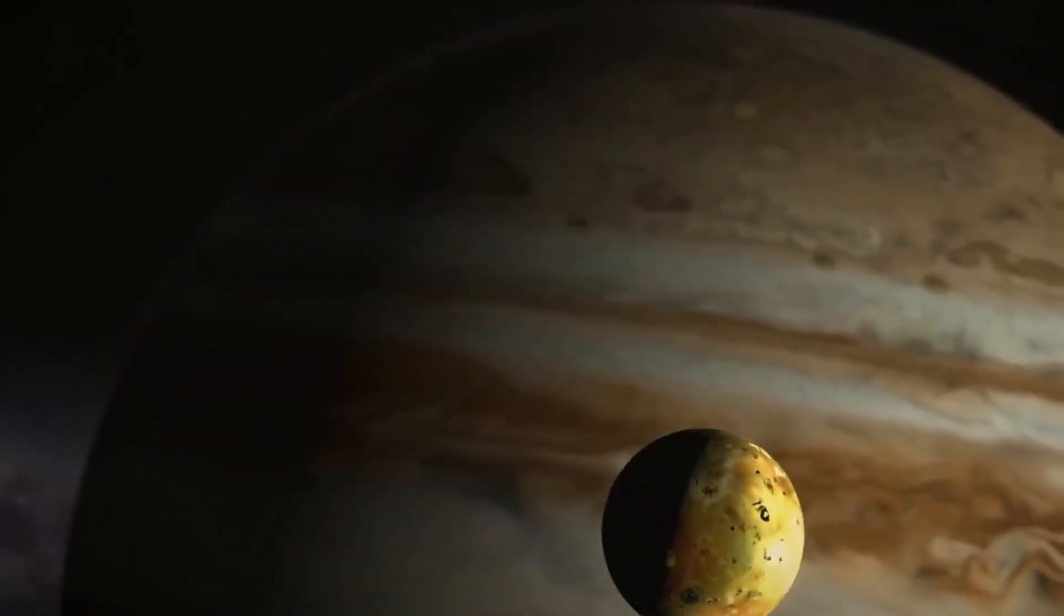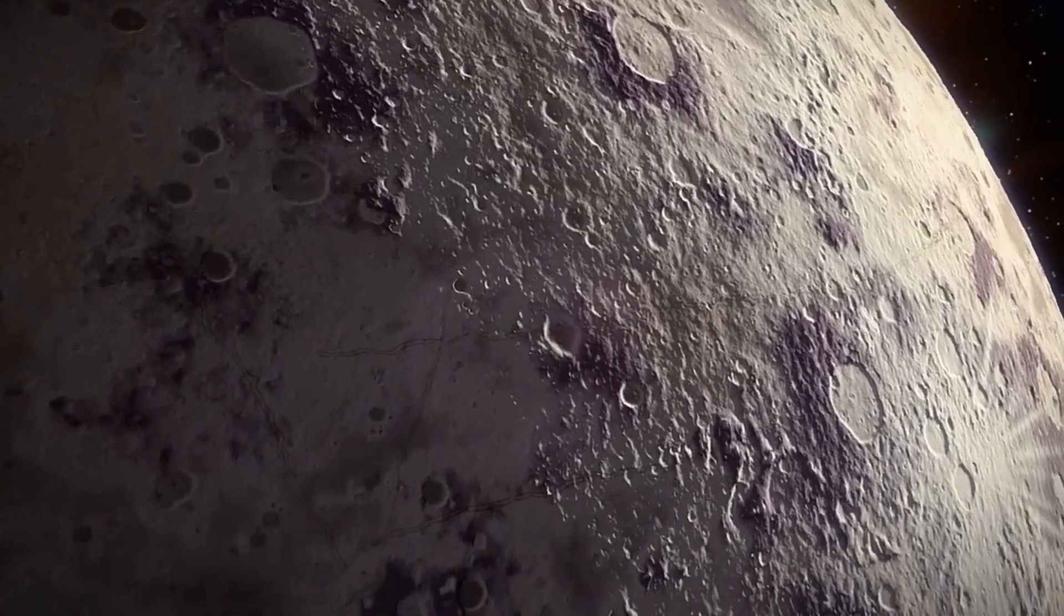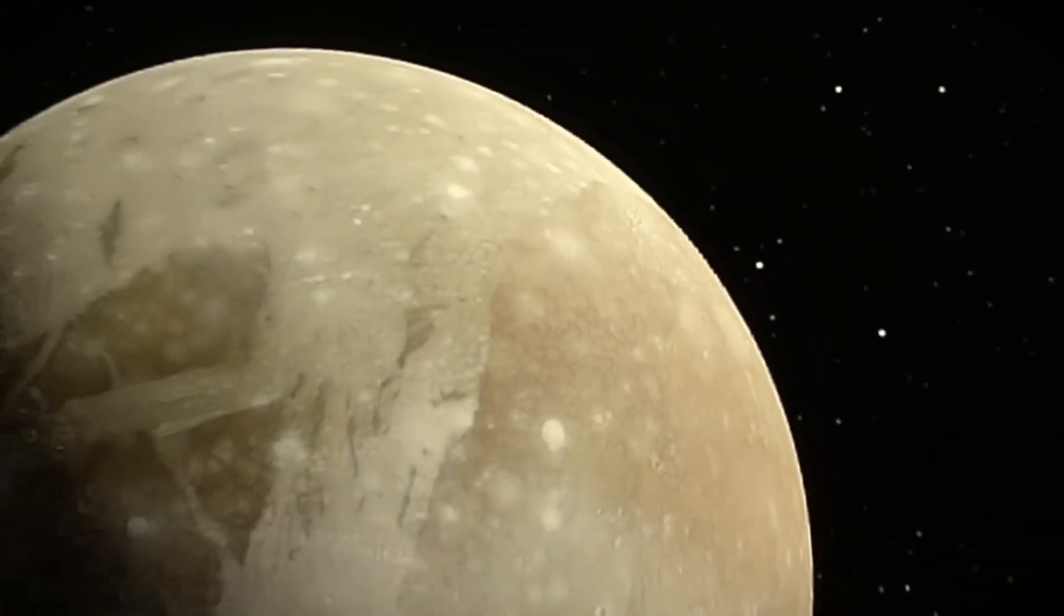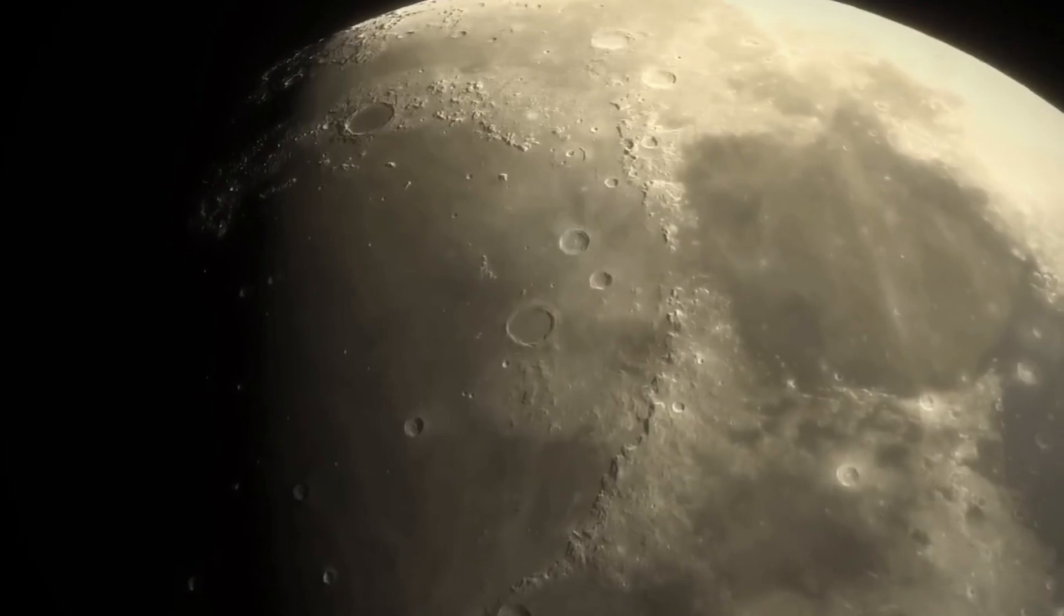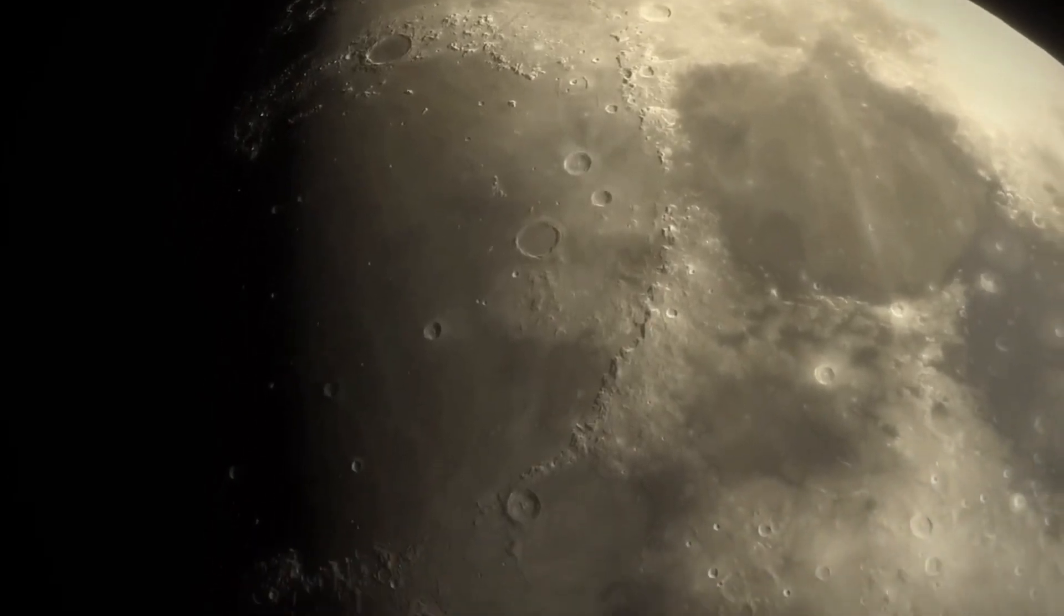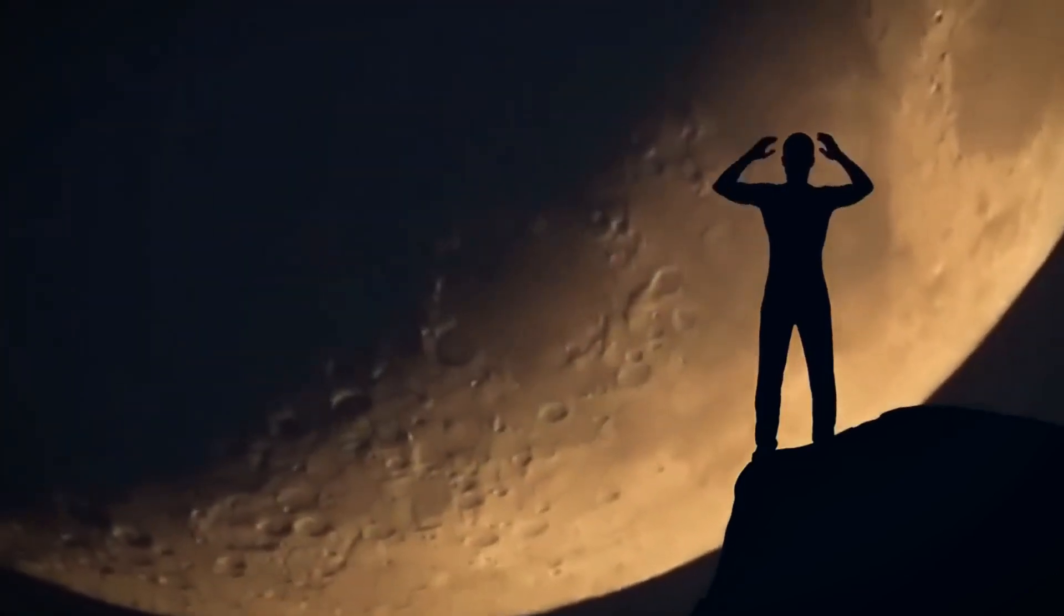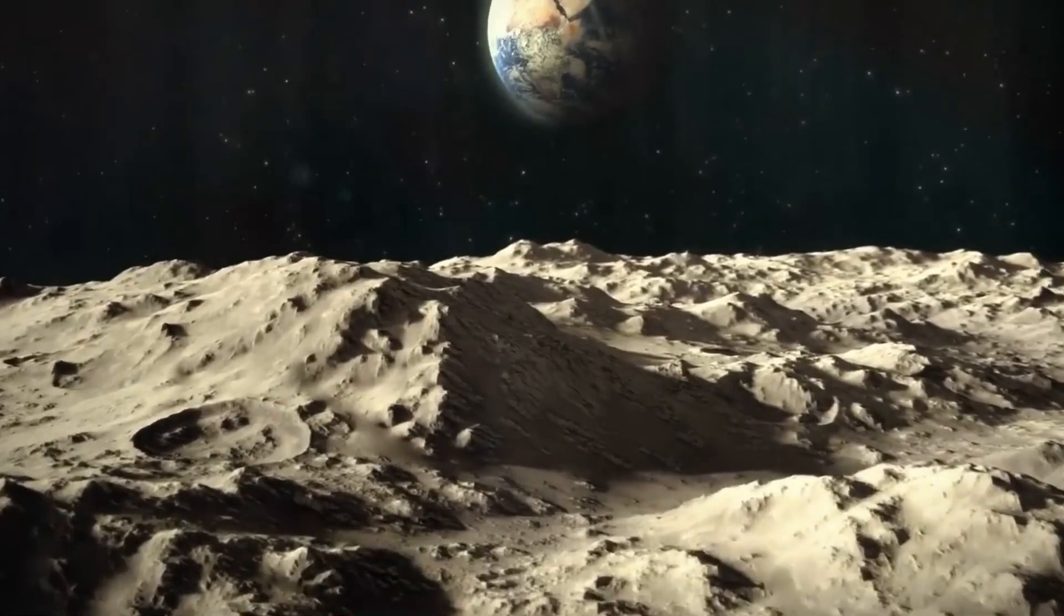Yet nestled within the shadow of this lunar luminary lies a tantalizing enigma, an elusive companion that may have once danced in tandem with Earth's primary satellite. The giant impact hypothesis posits that Earth's lunar companion was forged from the remnants of Theia's cataclysmic collision. However, lingering within the annals of astronomical discourse is the speculation of an erstwhile companion to our beloved moon.